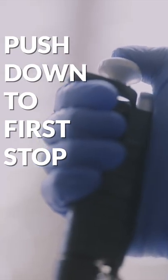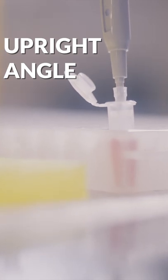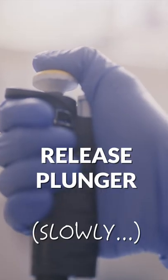Step 3: Push the plunger down to the first stop, insert the pipette tip into the liquid as upright as possible, and slowly release the plunger to suck up the liquid.